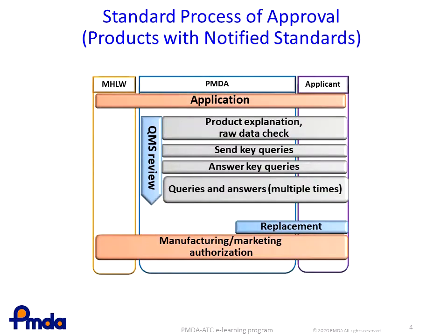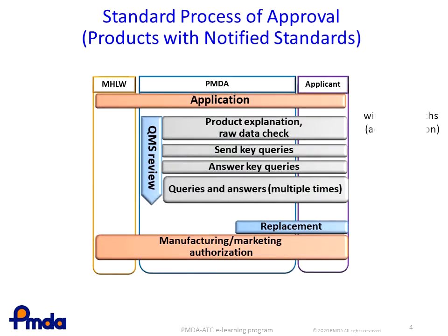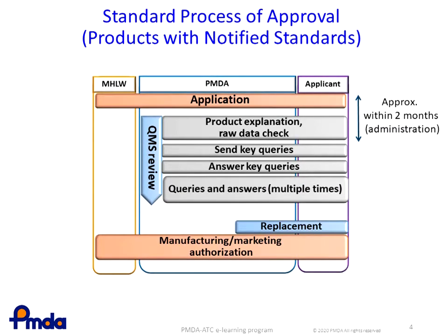This is the target timeline of the approval process for ordinary products, for which expert discussion is not required. The administrative process of document review and raw data analysis takes approximately two months after receiving an application. After the review, some key inquiries and answers are exchanged between the applicant and PMDA, and iteration of inquiries and answers for further clarification continues for about four months.